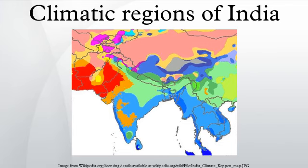India has a large variation in climate from region to region due to its vast size. India experiences climate from four major climate groups, which can be further subdivided into seven climatic types. For ecological regions, see ecoregions of India; for regions, see list of regions of India.